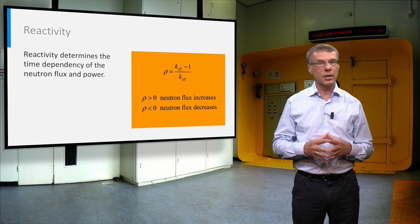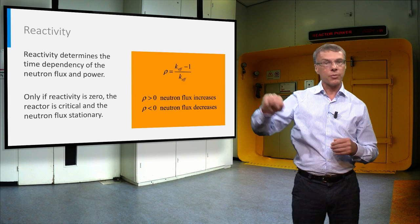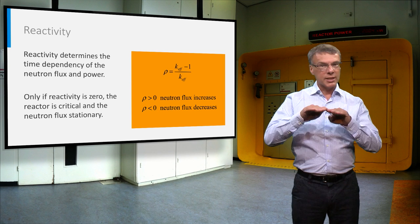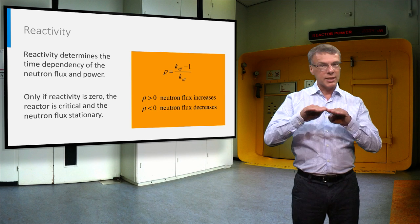If reactivity is larger than zero, the neutron flux increases with time. If it is less than zero, it decreases in time. Only if the reactivity is exactly equal to zero, the flux remains stationary.